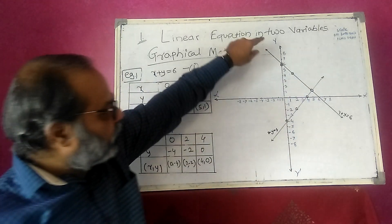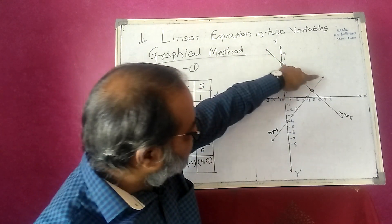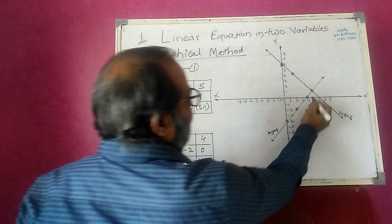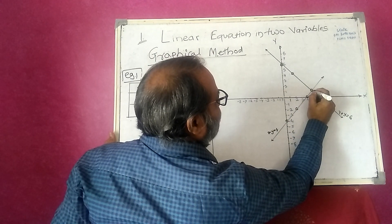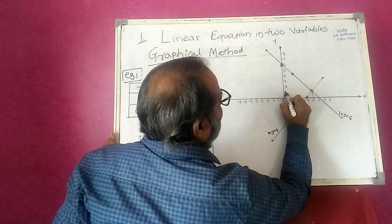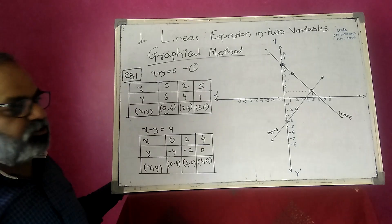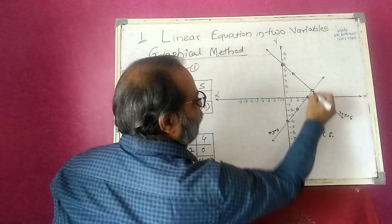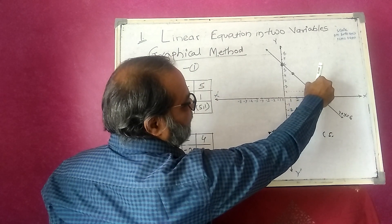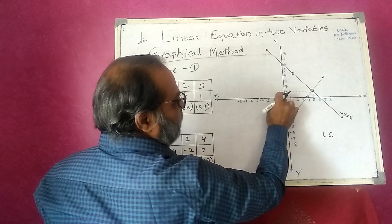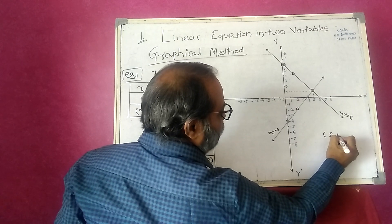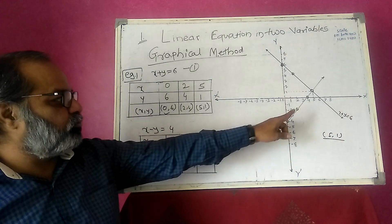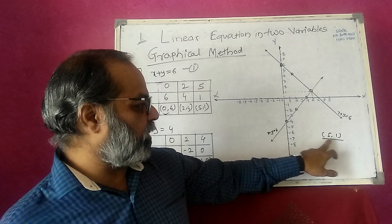Now concentrate here. x plus y is equal to 6 — this is the straight line for that equation. x minus y is equal to 4 — this is the straight line for that equation. The lines intersect at a point. I draw a perpendicular to the x-axis which touches 5, and a perpendicular to the y-axis which touches 1. So (5, 1) is the solution using the graphical method.